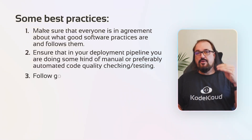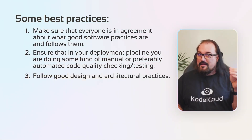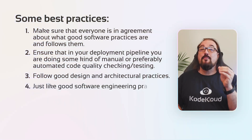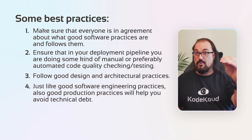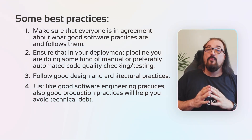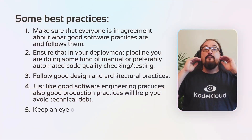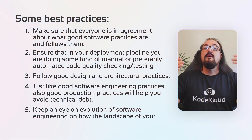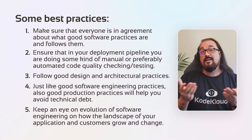In addition, make sure that you are keeping an eye on good design and architectural practices, both in infrastructure and in code, and make sure you have good production practices as well. It can't just be software engineering — it's also going to be good architectural practices and good production practices. This will help you avoid technical debt. Last but not least, keep an eye on the evolution of software engineering, architecture, and production practices, because your application and your customers are going to grow and change.